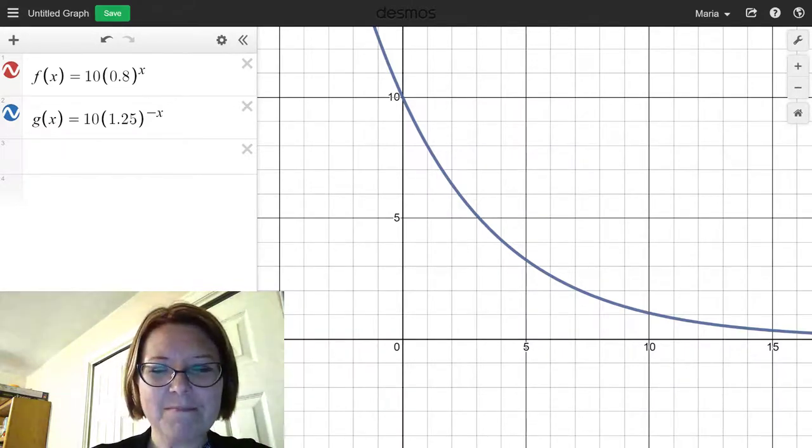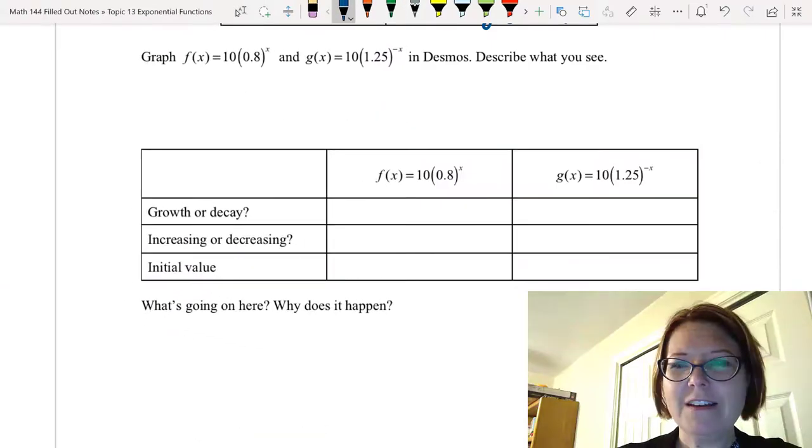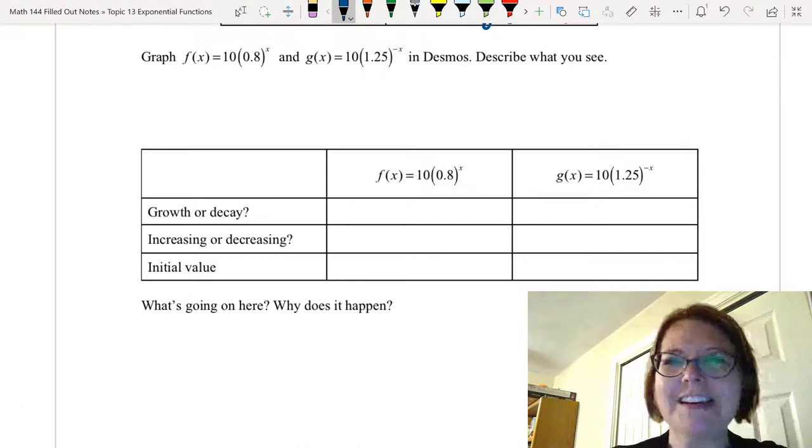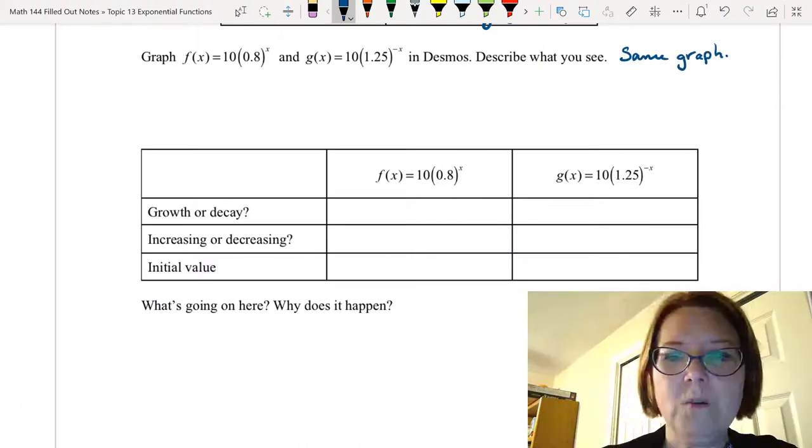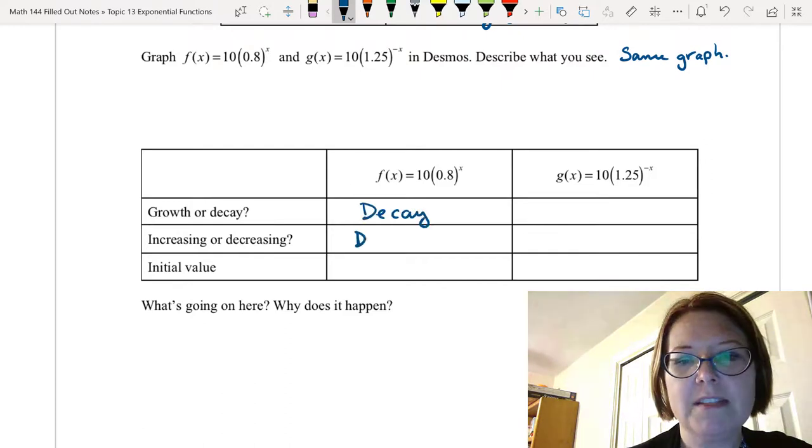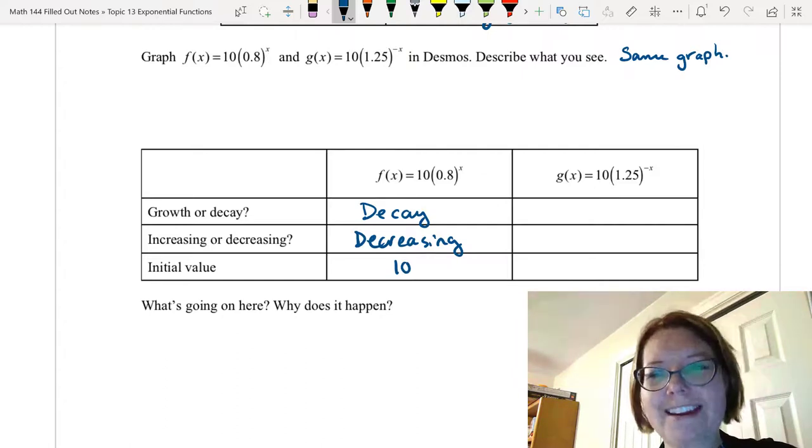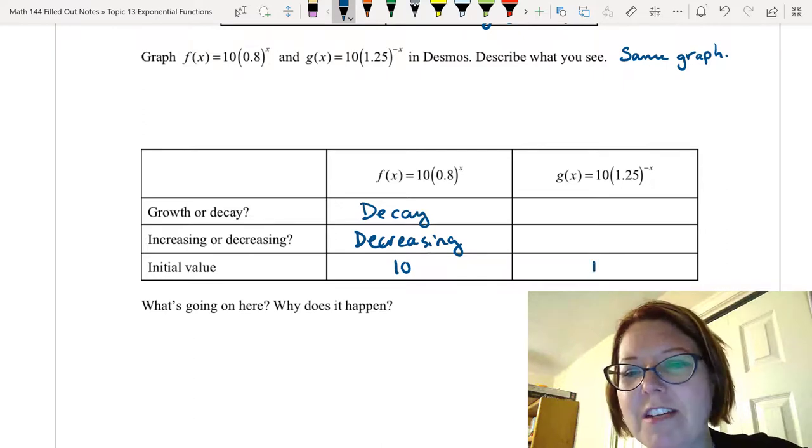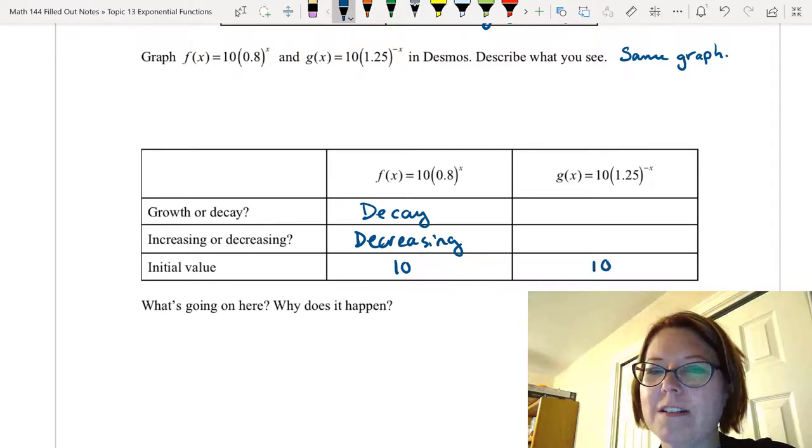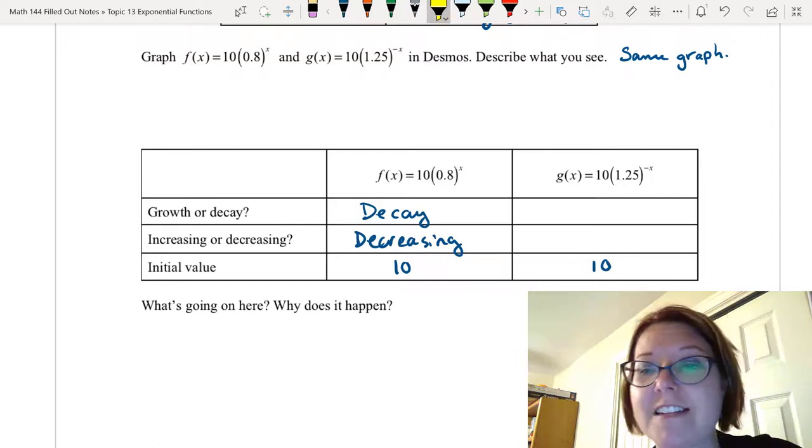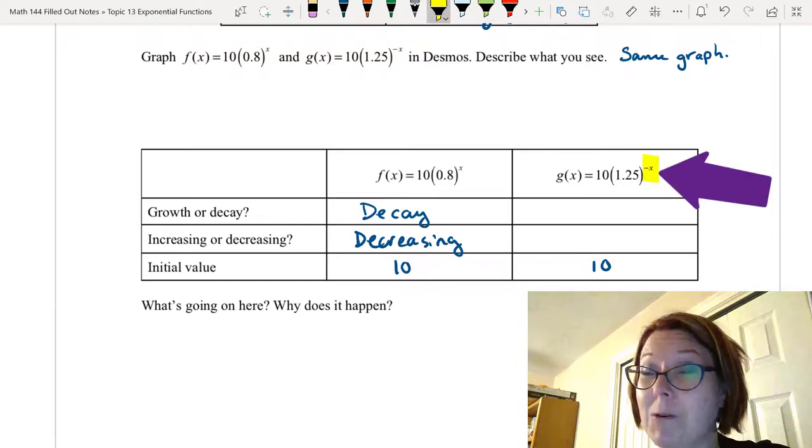Well why would that be? Let's go take a closer look at it. So in terms of describing what we see, these are the same graph. We know that f of x was decay. We know that means it's decreasing. And we know its initial value was 10. Now g of x, if you look at it and don't pay close attention, you would say that the initial value is 10, which it is, and that it was growth or increasing. But the problem is that this has undergone a transformation. It's there in the exponent. The x was replaced with negative x.